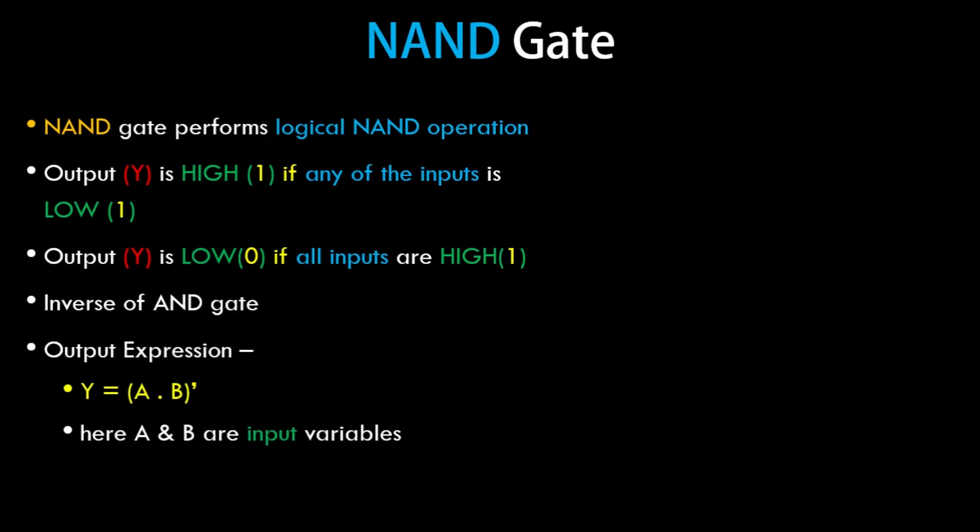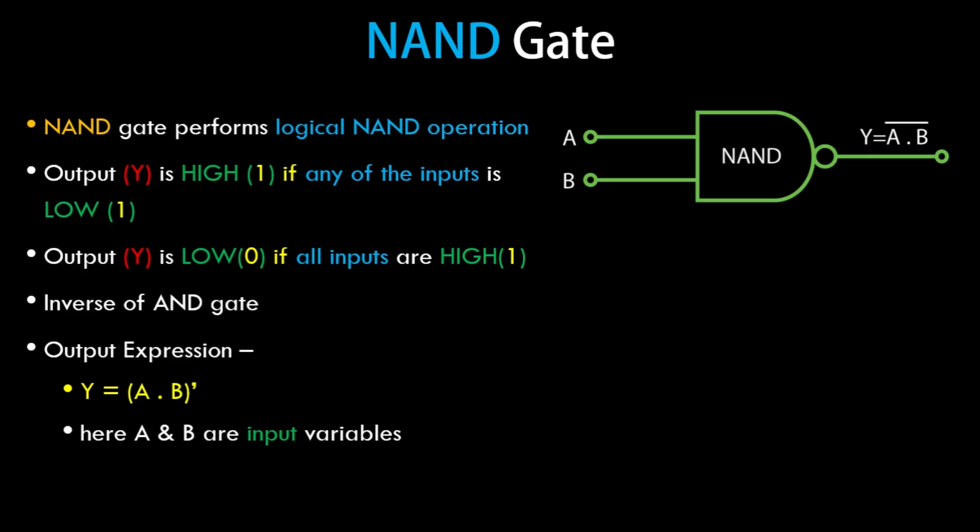The output expression is given as A AND B, the whole complement. The symbolic representation is as shown. The NAND gate symbol is pretty much similar to the AND gate symbol, but here we have a bubble at the output line. This is a two-input variable NAND gate with single output Y, which is equal to A AND B the whole complement.